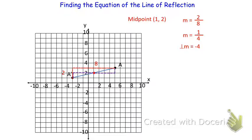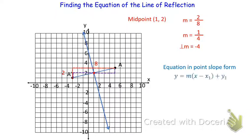Let's go ahead and draw that line. From our midpoint, it will go down 4 and 1 to the right, or we can go the other direction — up 4 but 1 to the left. Now let's find the equation using point-slope form. In point-slope form, if you know a point (x₁, y₁) — in this case the midpoint (1, 2) — we can substitute that in along with the slope m. Rewriting this, we get y equals negative 4 times the quantity (x minus 1) plus 2.